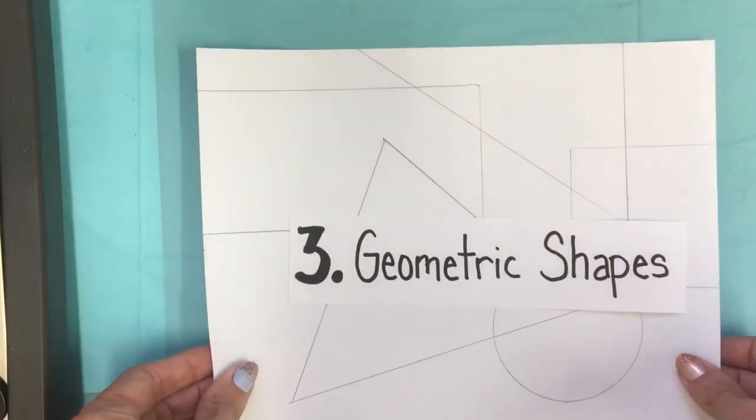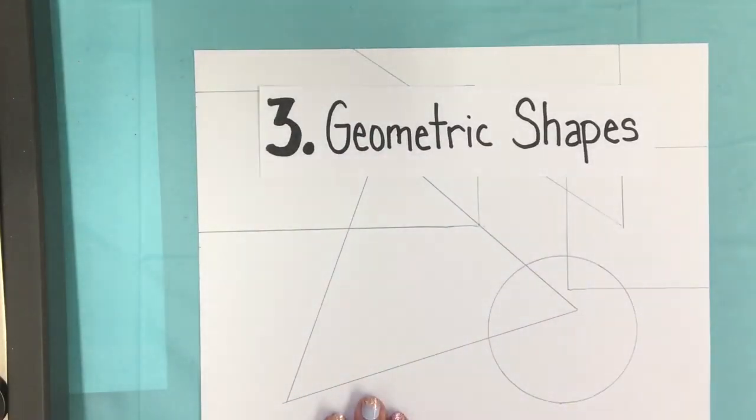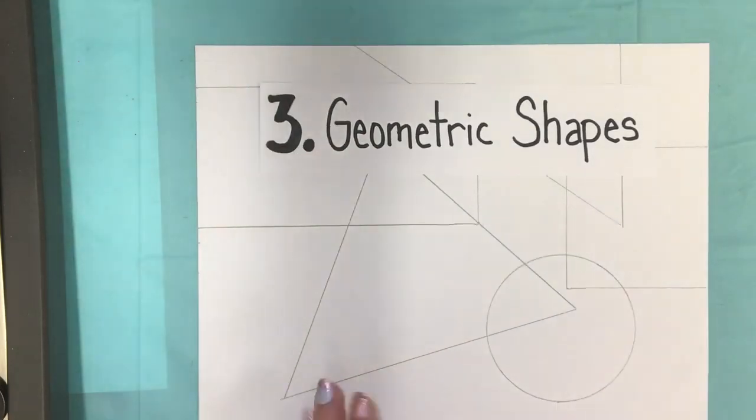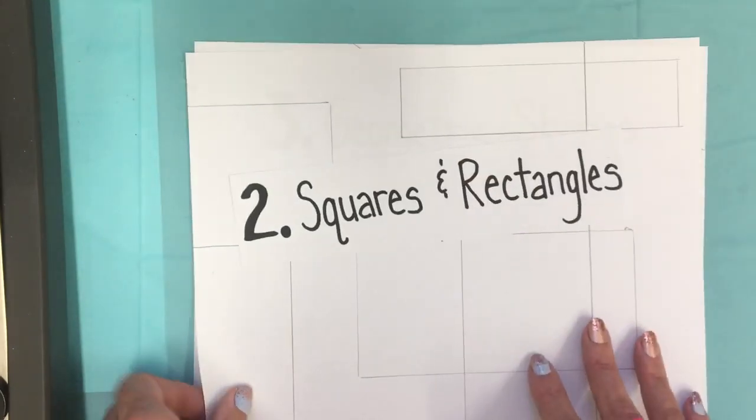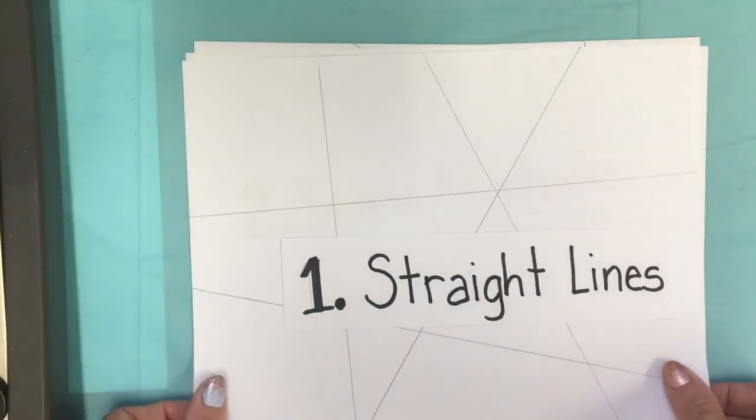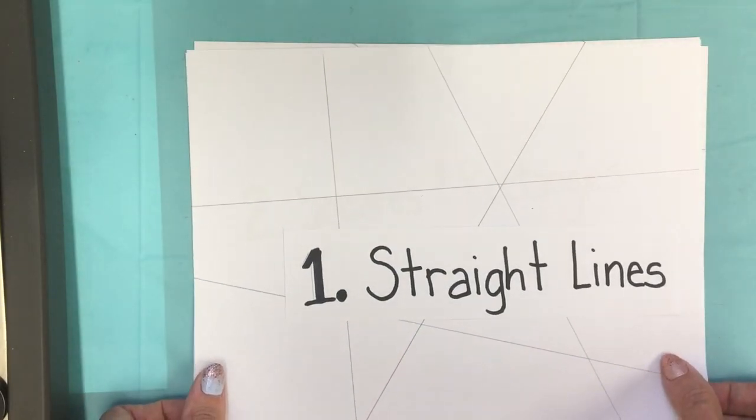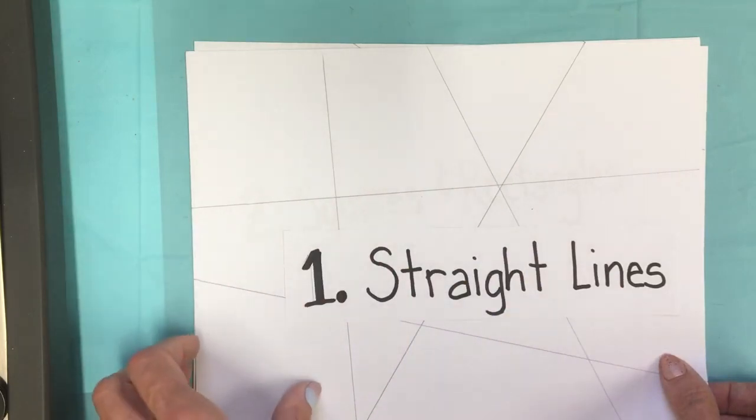So those are your three choices this week. You can choose the geometric shapes, or you can choose the rectangles and squares, or you could choose the straight lines. You do not have to do all three. Just pick one. Draw it in pencil first.